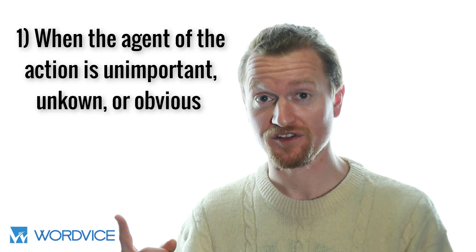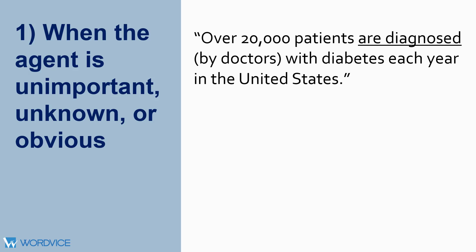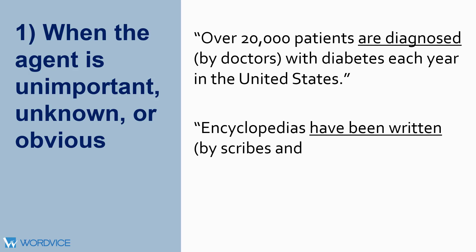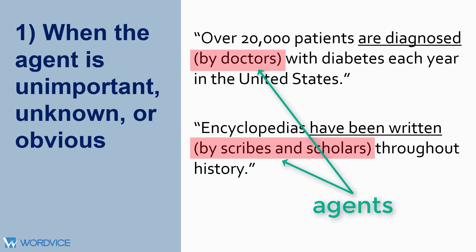Let's talk about three circumstances in which using the passive voice can be a good decision. First, choose the passive voice when the agent of the action is unimportant, unknown, or obvious to readers. For example, 'over 20,000 patients are diagnosed with diabetes each year in the United States,' or 'encyclopedias have been written by scribes and scholars throughout history.' In the first example, naming the agent of diagnosis is redundant, as doctors are almost universally the ones who diagnose diseases. In the second example, the author assumes the reader will not be interested in the authors, or perhaps the authors are unknown. The agent may, of course, be included if this information is important to the statement.